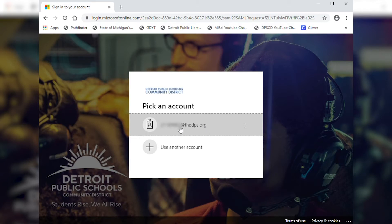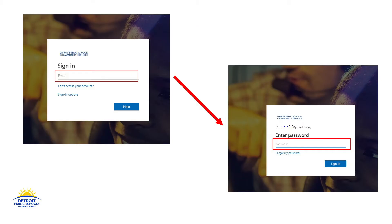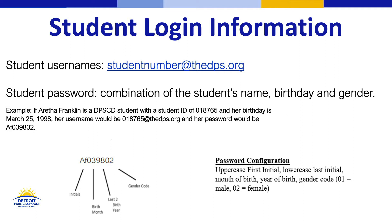Student usernames are going to be anywhere from 5 to 11 digits. Students can go ahead and type in those numbers — it'll be a student ID number with no letters. Students will then be brought to a screen where they will see their student username at the top and it'll say enter password. Student passwords are a combination of letters and numbers and are case sensitive. Student passwords are: first initial of your first name uppercase, first letter of your last name lowercase, two-digit birth month, two-digit birth year, then zero one for male and zero two for female.